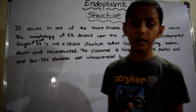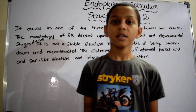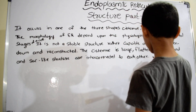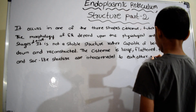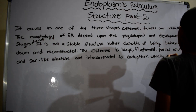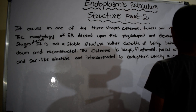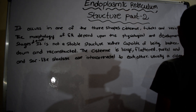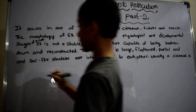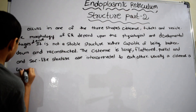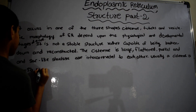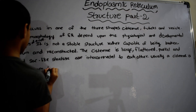Usually a cisterna is 40 to 50 nm in thickness.